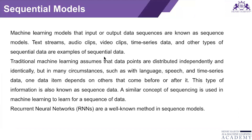Traditional machine learning assumes that data points are distributed independently and identically. But in many circumstances — such as with language, speech, and time series data — one data item depends on another that comes before or after it, just like in the share market, where tomorrow's share price depends on today's price. This type of information is also known as sequence data.